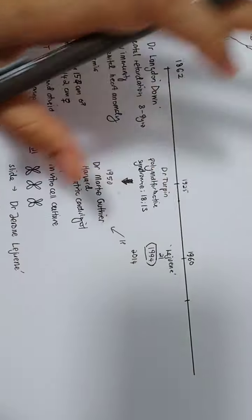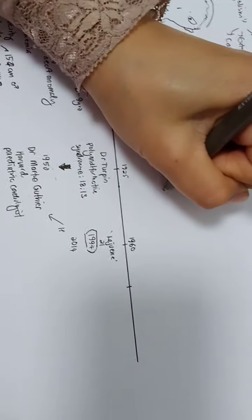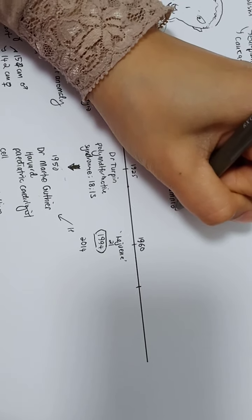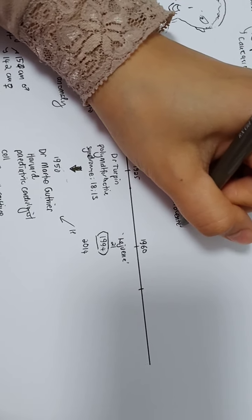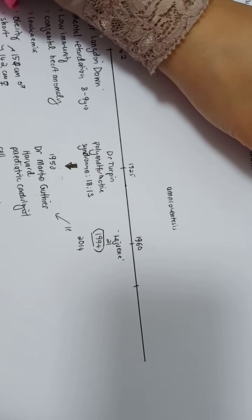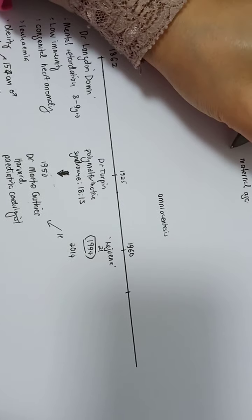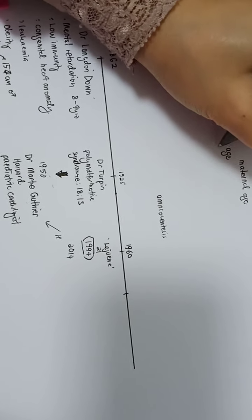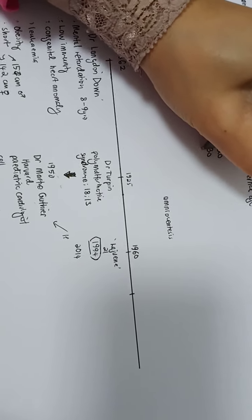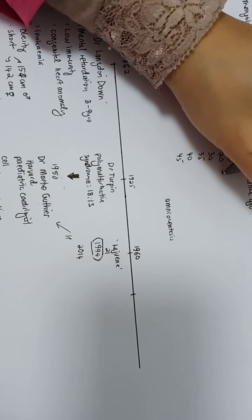Back then, they related Down syndrome with trisomy and they advocated to do amniocentesis. That is when we get the maternal age risk, maternal age relation with Down syndrome. As we know, at age 20, 30, 35, 40, 45 years old, we have different risks.